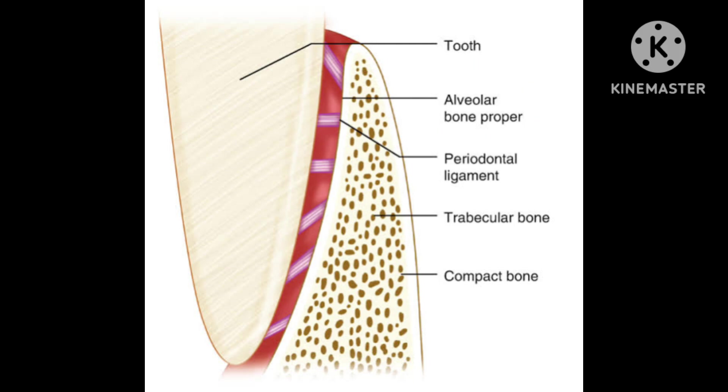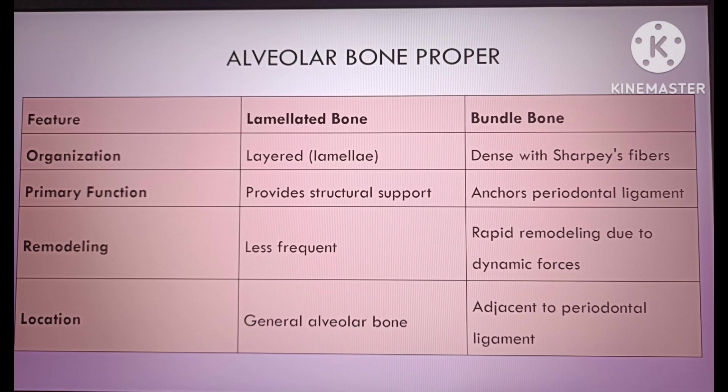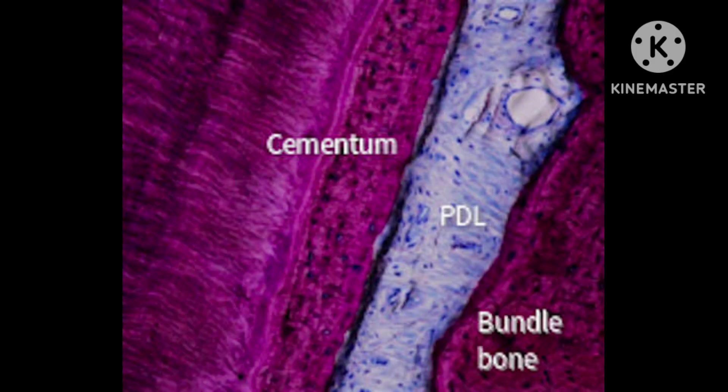The alveolar bone proper is made up of two distinct but complementary types of bone: lamellated bone and bundle bone. Lamellated bone is compact bone — dense and organized into layers — and provides structural strength to the alveolar socket. It is not directly involved in tooth attachment but serves to support the overall structure of the alveolar bone.